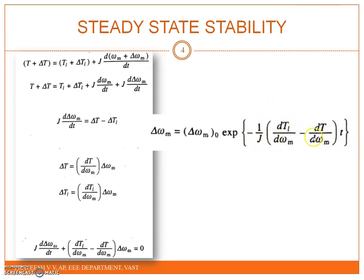For delta omega_M to approach zero as t approaches infinity, the exponent must be negative, requiring that dT_L by d-omega_M minus dT by d-omega_M is greater than 0. Therefore, the condition for steady state stability is: dT_L by d-omega_M must be greater than dT by d-omega_M.